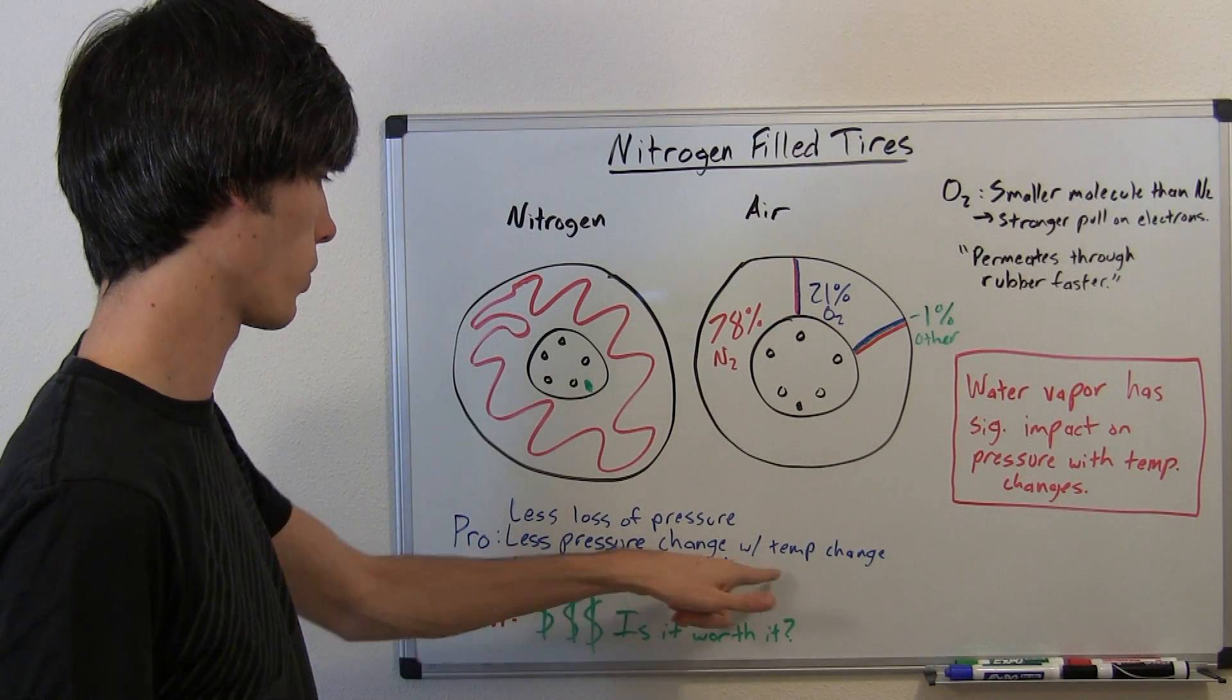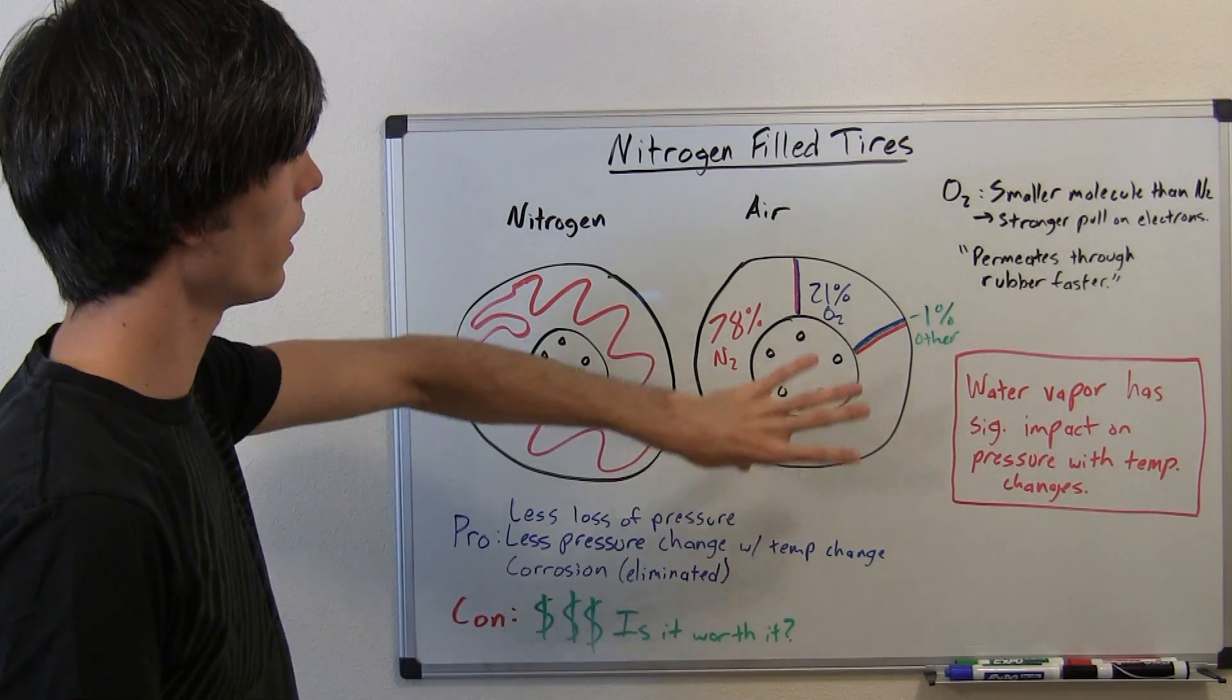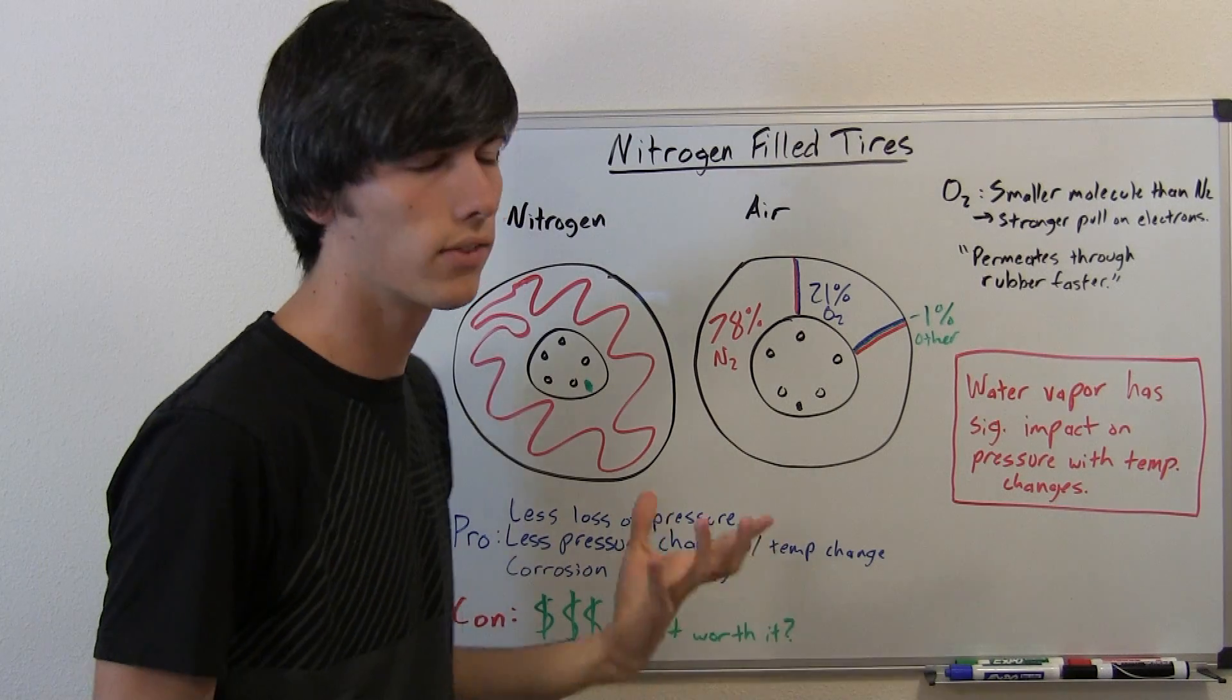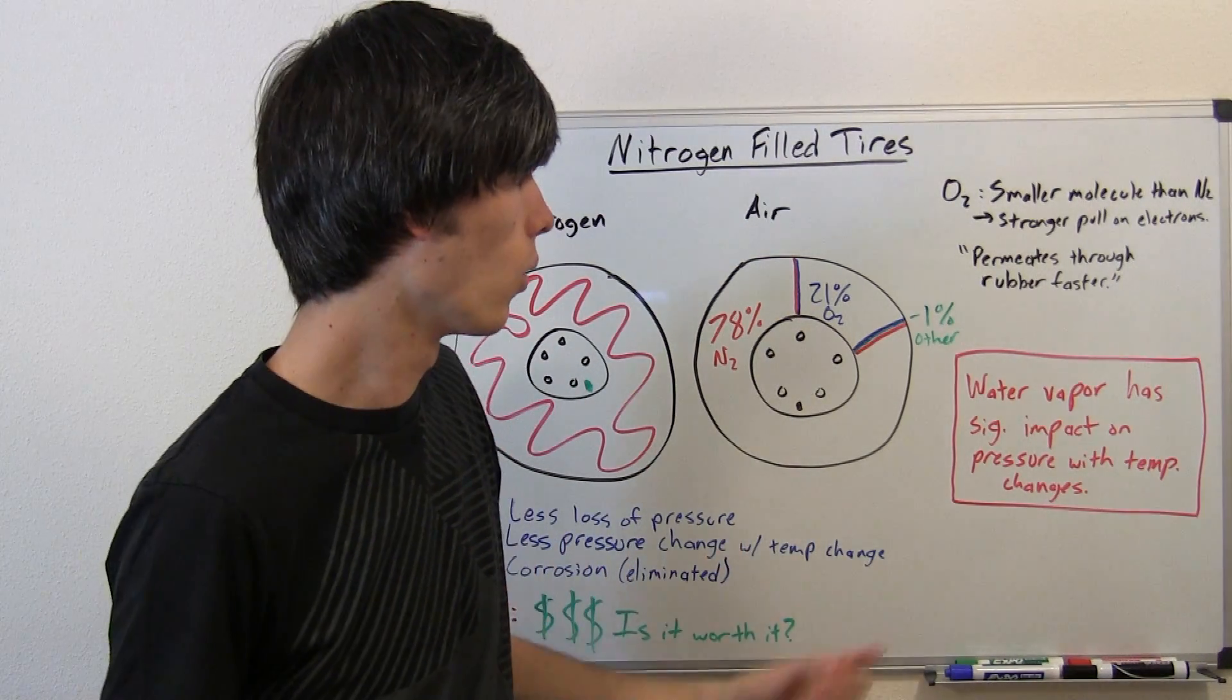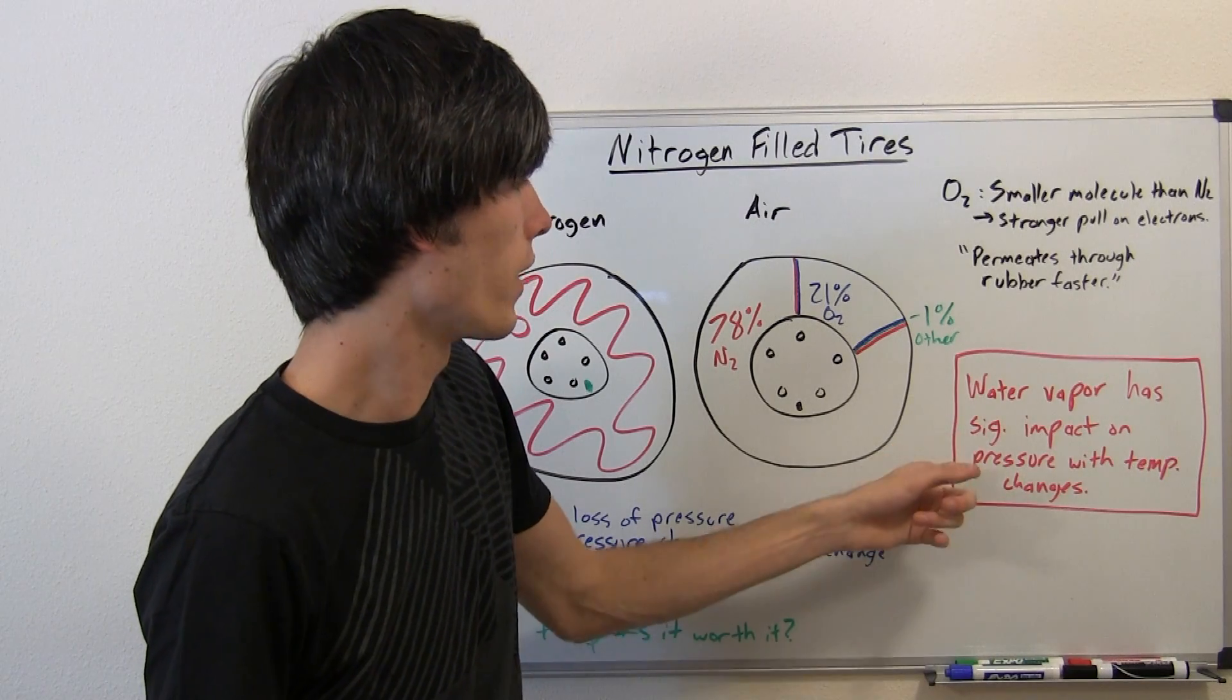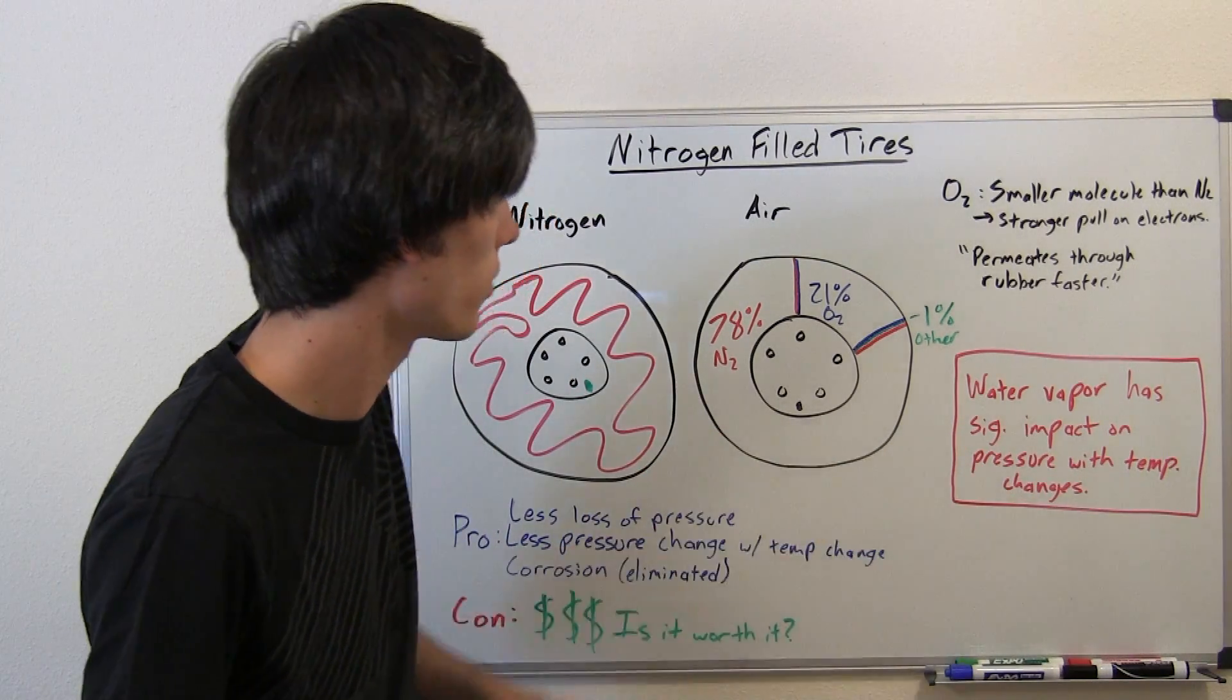Less pressure change with temperature change. This is the big one. Because air has water vapor in it, and say it's a high humidity when you're pumping your tires, well, you put a lot of water vapor in your tires. Water vapor has a significant impact on pressure with temperature changes. So what I'm saying there is, say you heat up your tires.